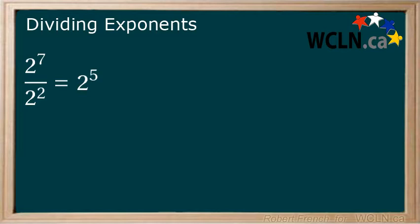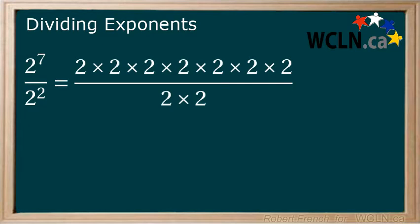Let's look at why this is the case. 2 to the power of 7 is 2 multiplied to itself 7 times. 2 to the power of 2 is 2 multiplied to itself twice.